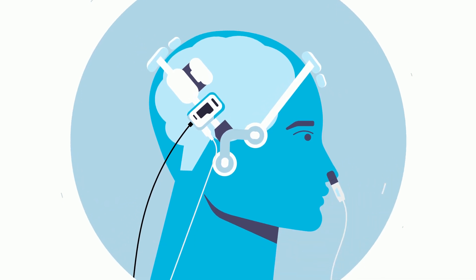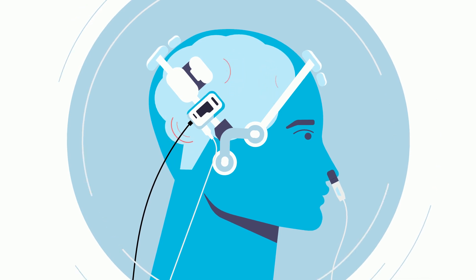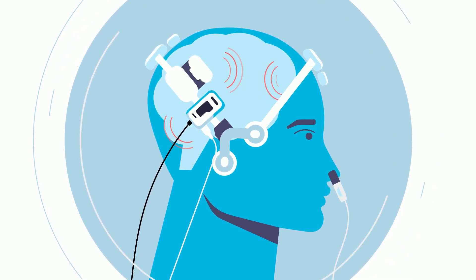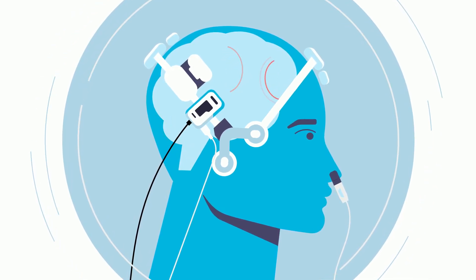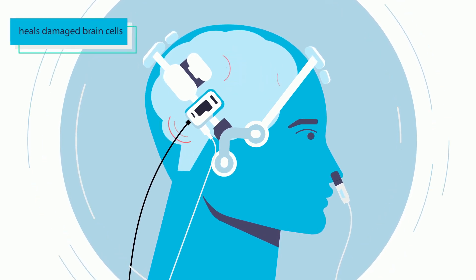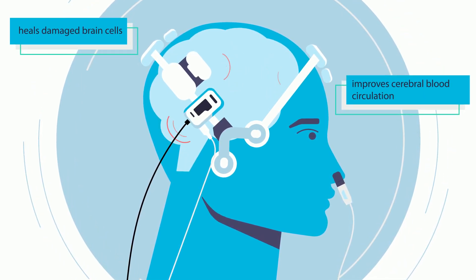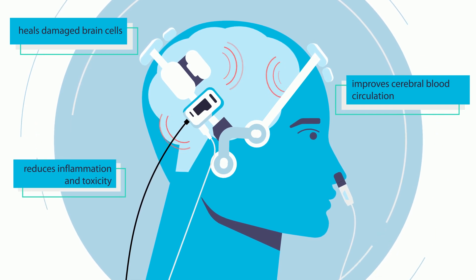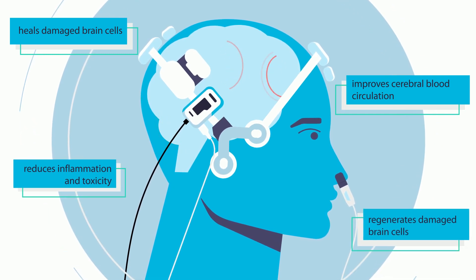Brain photobiomodulation involves the delivery of high-powered near-infrared light energy through the skull to stimulate the brain. This process heals damaged brain cells, improves cerebral blood circulation, reduces inflammation and toxicity, and regenerates damaged brain cells.